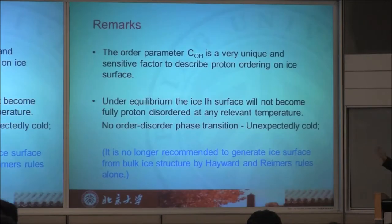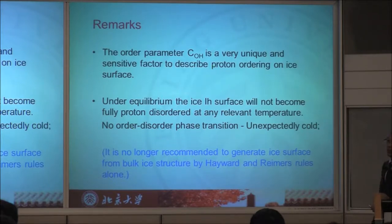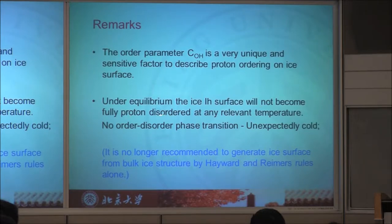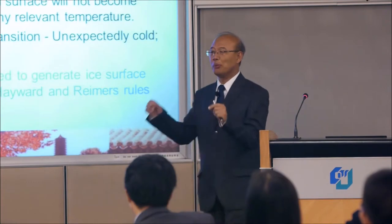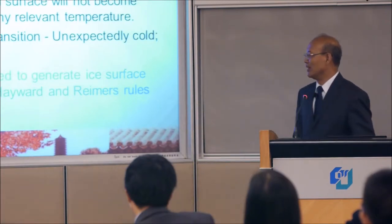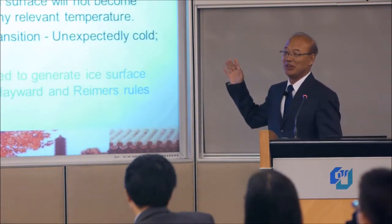So apart from the hexagonal surface, it's the same. For the first step, I can do a little summary. We didn't expect that the order parameter was very effective. It presents a unique way to describe the surface of the ice. The ice surface is very orderly without phase transition. In other words, the ice surface is even more orderly than you thought.